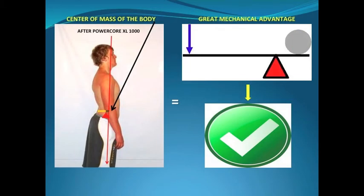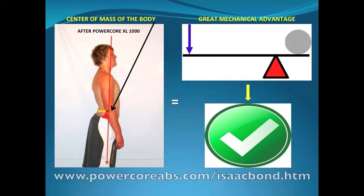Here is our athlete after eight weeks on the PowerCore XL1000 orthopedic strength training equipment. Not only did he maximize his core structure in his lower back, he also maximized his core structure in his neck. His center of mass has moved into the correct position, and the lever arm at his L2-L3 vertebrae verified he was in a position of mechanical advantage. He developed his average core structure into great core structure. If you care to read this athlete's testimony, you can go to www.powercoreabs.com/IsaacBond.